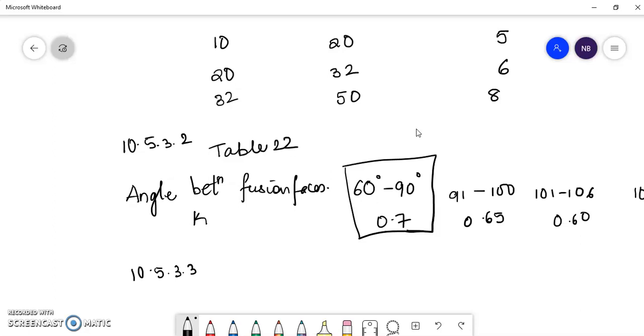And when it is an incomplete penetration, the minimum thickness of the weld metal common to the parts joint excluding the reinforcements has to be considered.